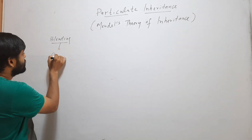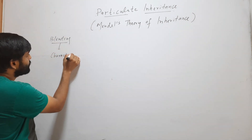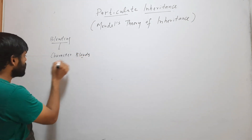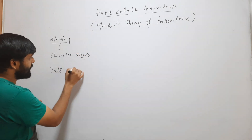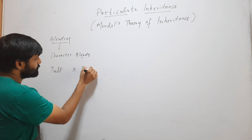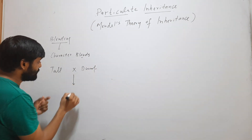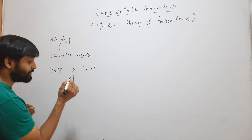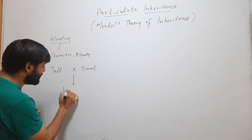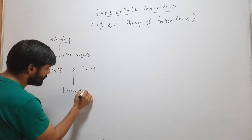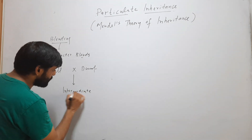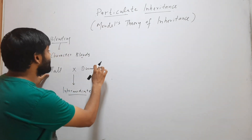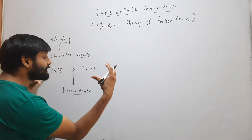The blending theory of inheritance says that characters blend. Suppose we have a tall plant and a dwarf plant. When we cross them, according to this blending theory, we will get an intermediate — a plant with a length between tall and dwarf. So here, the character blends.